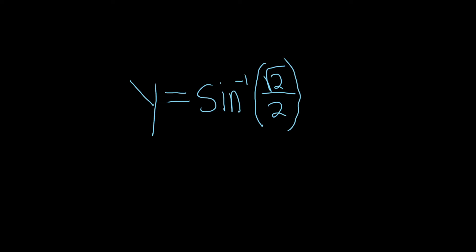In this problem we have to find the exact value of the real number y. The way to do this is to first apply the definition of the inverse function. If the sine inverse takes this number and gives you y, this means that the sine of y is equal to the square root of 2 over 2.